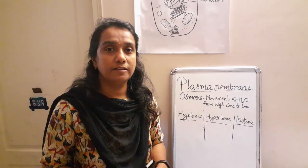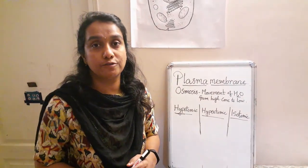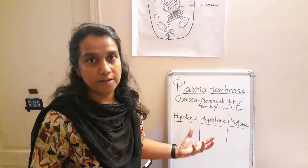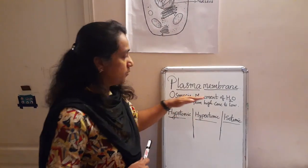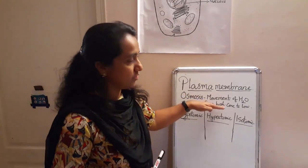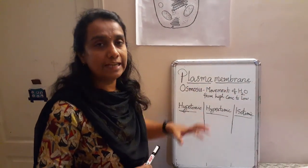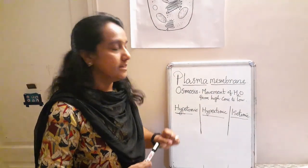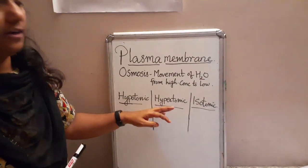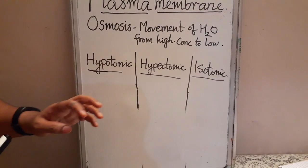To learn more about osmosis, we have to learn about three types of solution. Osmosis means the movement of water molecules from high concentration to low. The three types of solutions are hypotonic solution, hypertonic solution, and isotonic solution.